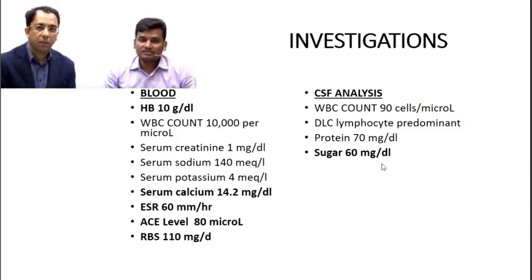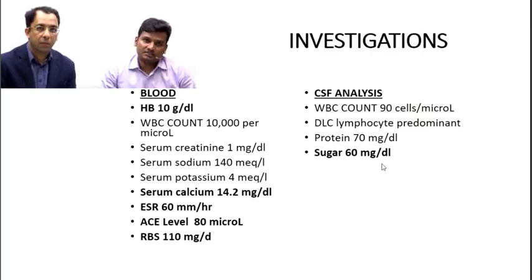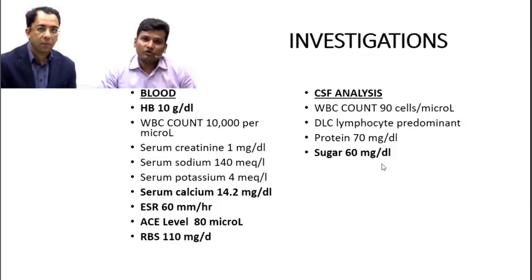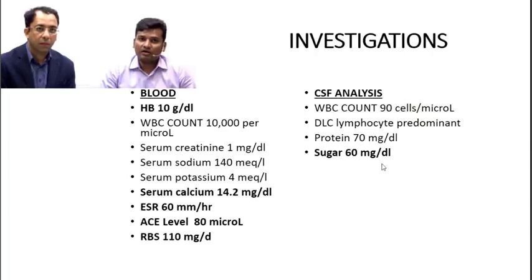CSF analysis showed WBC count of 90 cells (elevated), lymphocyte predominance, and protein of 70 — all three findings suggest tuberculosis. However, CSF sugar was 60, which is in the higher normal range and does not satisfy the criteria for tubercular meningitis. The patient is also non-diabetic. Furthermore, elevated ACE, elevated ESR, and hypercalcemia are not consistent with tubercular meningitis, raising doubt about the diagnosis.